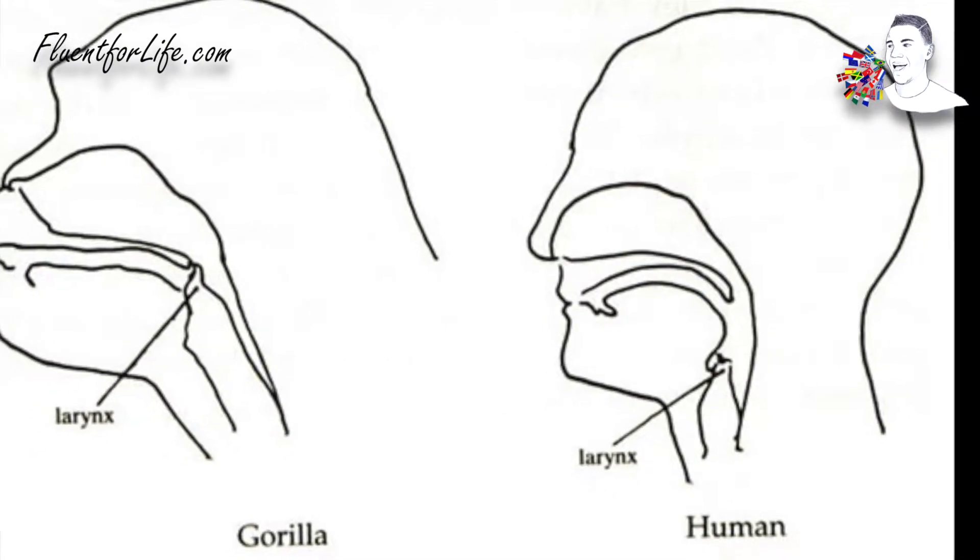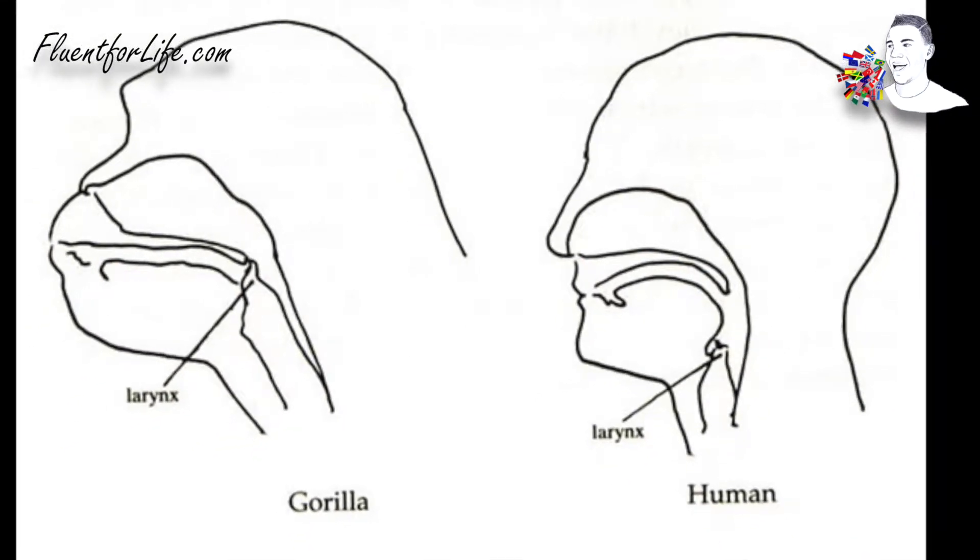What we do know is that you need some physical features to be able to speak and produce speech. We know that modern man is endowed with a larynx that has lowered down in the throat, and this makes it possible for us to produce speech. Whereas chimpanzees have their larynx in the upper part of the throat, which makes it possible for them to eat and drink at the same time — which humans unfortunately can't do. But that explains that modern men were able to talk and our ancestors weren't.